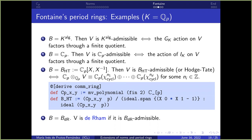In Lean, B_HT is defined as follows. First, CP_XY is polynomials in two variables over Cₚ — that's MvPolynomial (Fin 2) Cₚ. Then B_HT is the quotient of this polynomial ring by the relation that X times Y equals 1, i.e., we quotient by the ideal generated by XY − 1.